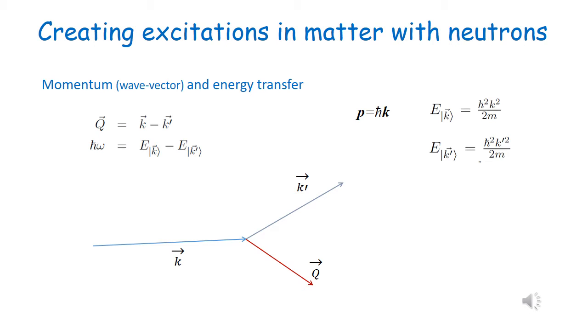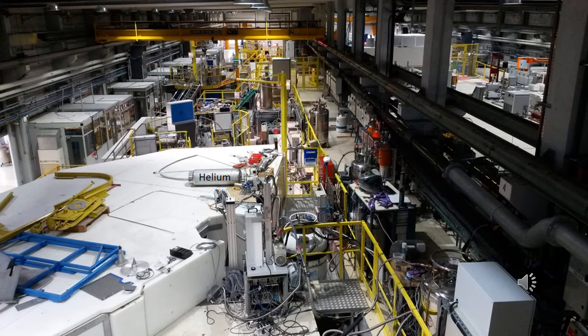Neutrons can create quantum excitations in matter by transferring momentum and energy. The momentum and energy lost by the neutron correspond to the momentum and the energy of the excitation that has been created in the superfluid helium in this case. Real life is slightly more complicated, and here in the foreground, you can see the IN5 instrument, where the experiment has been done at the ILL.